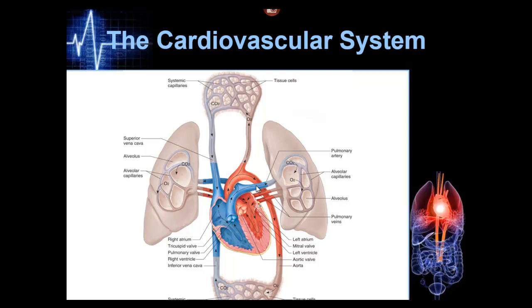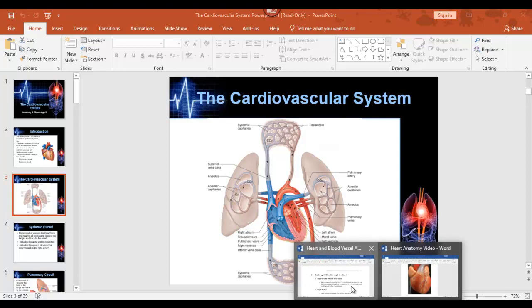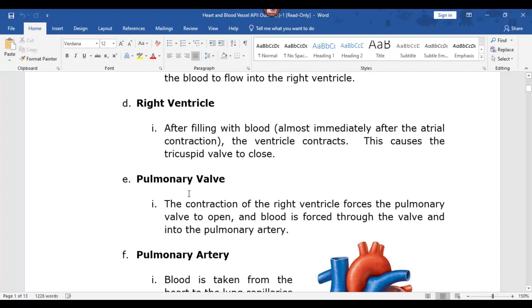When the left ventricle contracts, it forces the aortic valve open and pushes blood through the aorta — down to the lower extremities and up to the upper extremities. The blood has gone systemic, meaning body-wide. As it crosses the tissues it unloads oxygen, comes back on the right side, and the cycle repeats. That is blood flow through the heart.